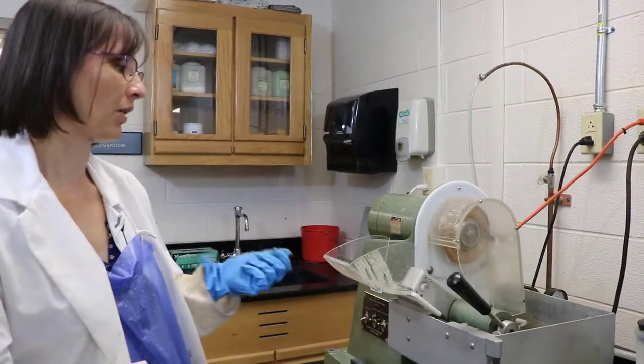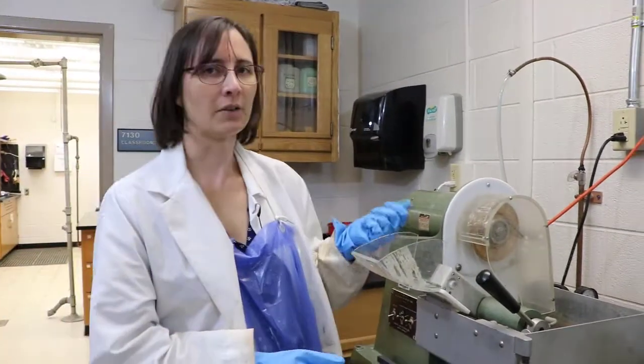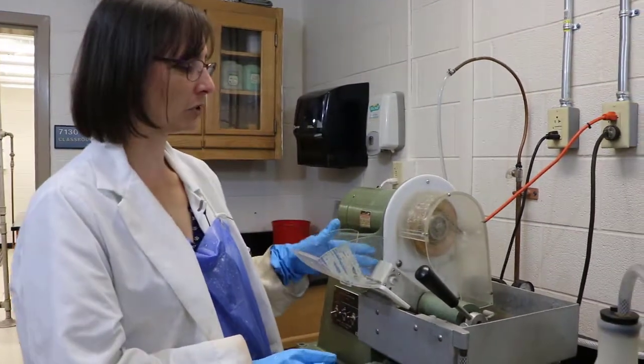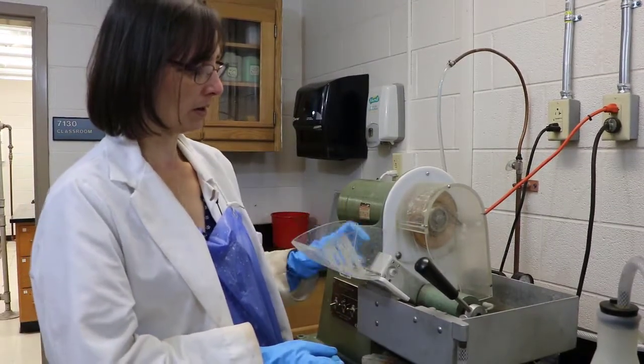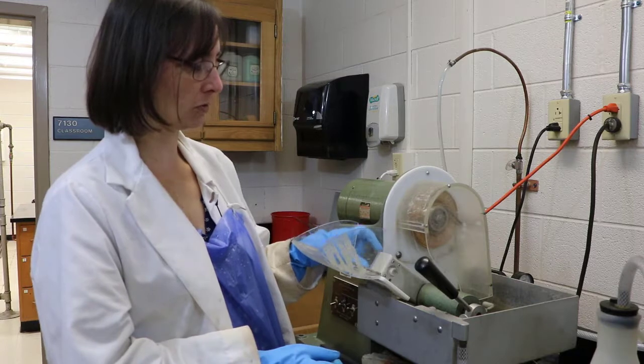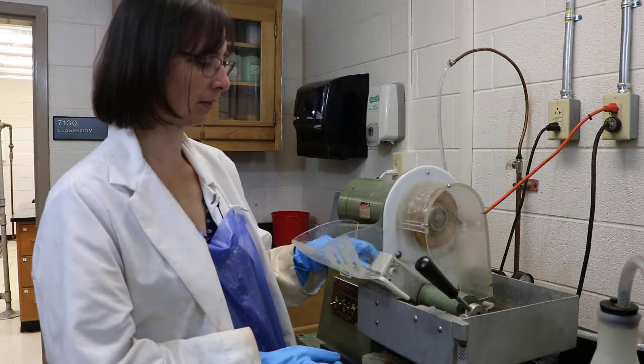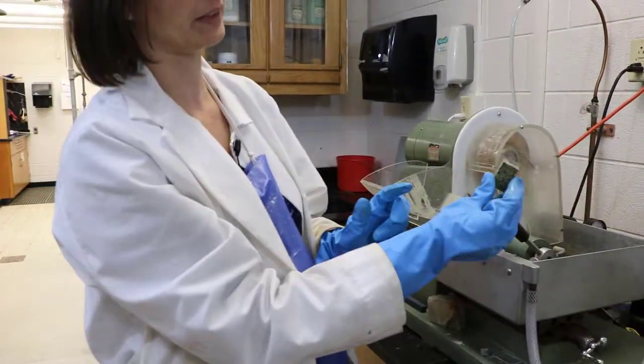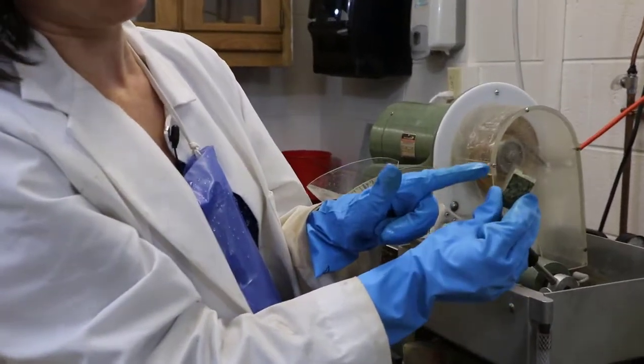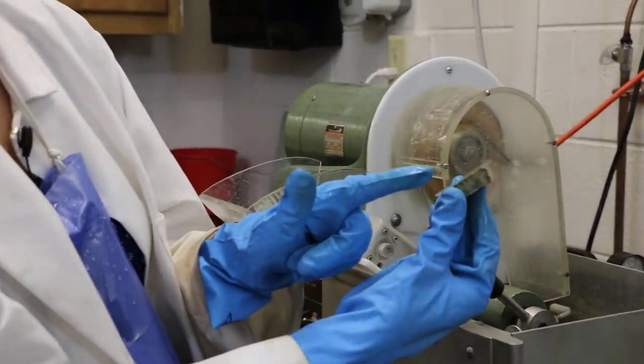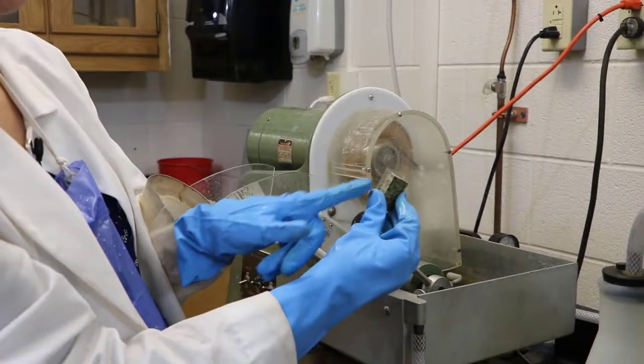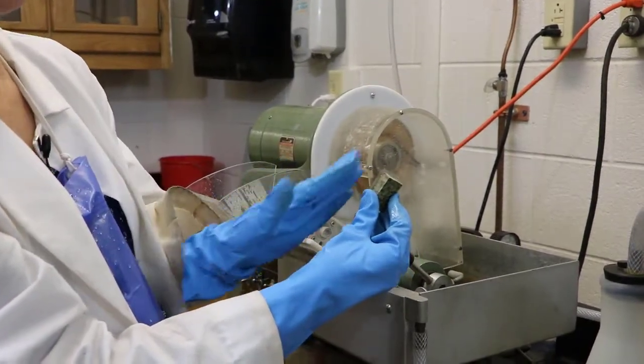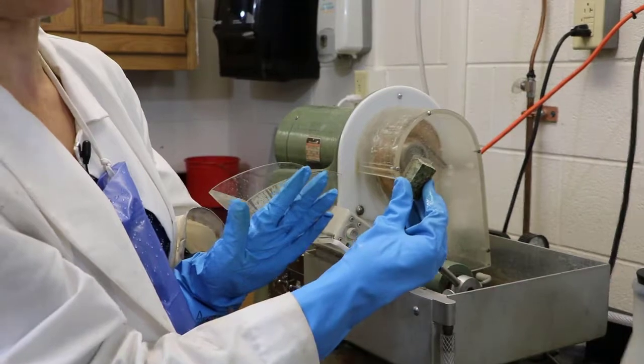In this video I want to show you the parts of the thin section cutoff saw. This saw is used to cut the rock chip that you use to make the thin section with. In this case you will have already glued your rock to the slide like this. And this instrument is used to cut off most of this rock chip so that you have a very thin slice of rock left over.